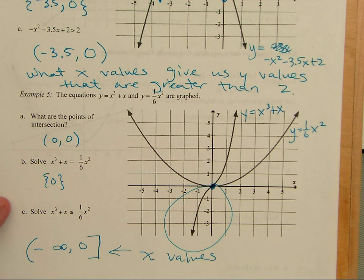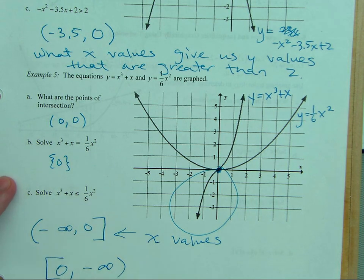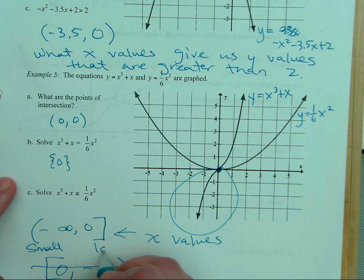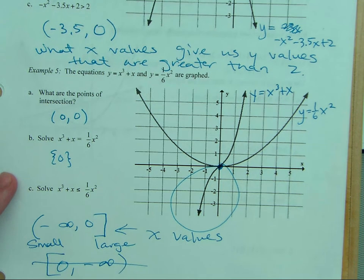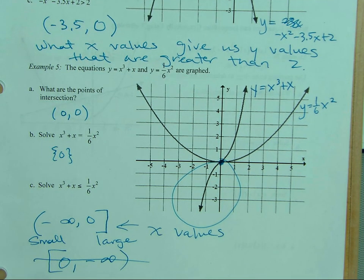I would never write it 0 to negative infinity. Are you asking if you could write it like this? I would not do that, because it just looks weird. We always want to go from small to large in order. It looks better. So, I would put the negative infinity first.